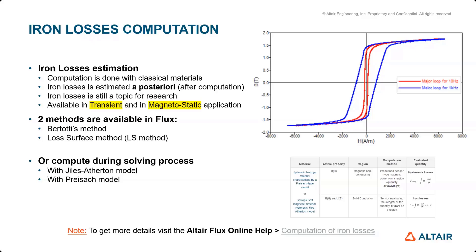Another type of iron loss computation can also be done during the solving process, which means we need to consider the exact BH loop — the hysteresis loop — of the material on each node. This takes a bit more time to solve, but it can bring more accuracy and can be used for bulk material.